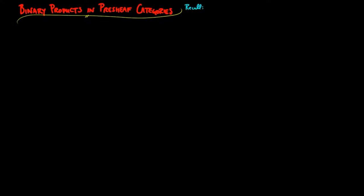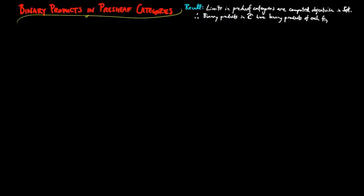The next structure required in Atapos is binary products, which are limits over the discrete category with two objects. Recall that limits in pre-sheaf categories are computed object-wise in the category of sets. Therefore, binary products in the category of pre-sheaves on C are binary products of each set of figures.